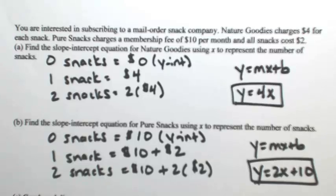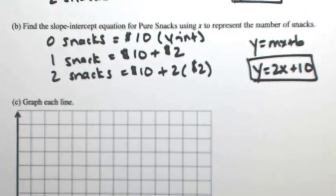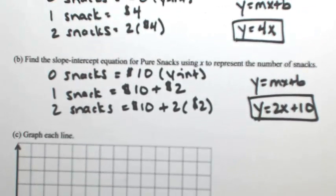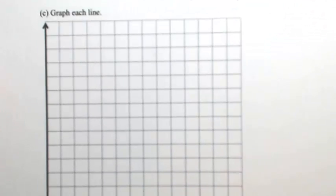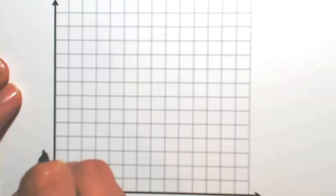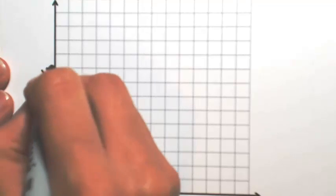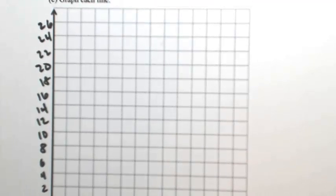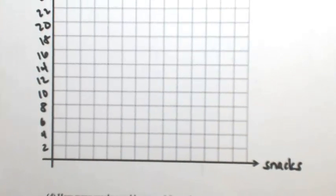Now we're going to graph both of these lines. I have a slope of 4 for the first line, and I have a y-intercept of 10 for the second line. So I think on the y-axis, I'm probably going to go by 2's because I don't want to start too high up where 10 would be. That's going to be how much everything costs, so that's money. Along the x-axis, this is going to be the number of snacks. I'm just going to go by 1's.